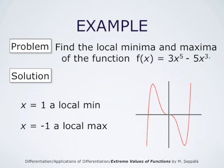Here is a graph of the function 3x to the power of 5 minus 5x cubed. The graph is symmetric with respect to the origin. x equals 1 is a local minimum and x equals negative 1 is a local maximum value of this function f.